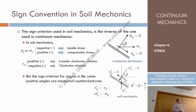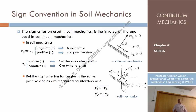In the case of the Mohr circle, the convention is that normal stresses are positive in tension and negative in compression. As for the tangential stresses, they are positive if they rotate clockwise around the interior of the plane, and negative counterclockwise.